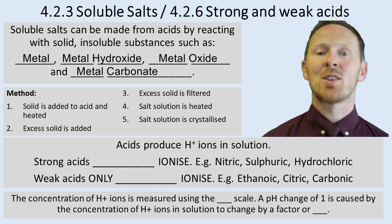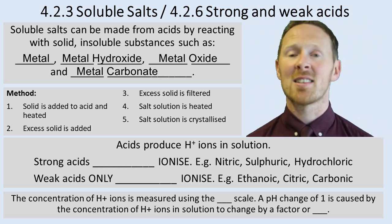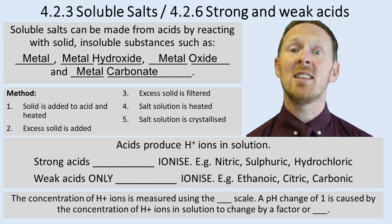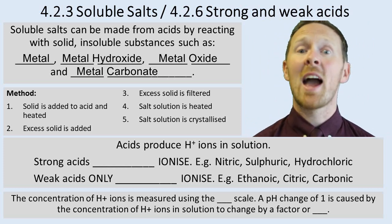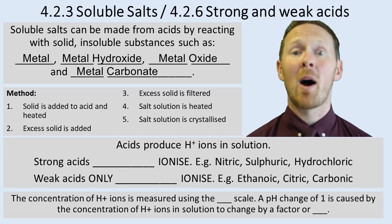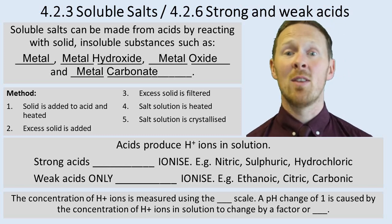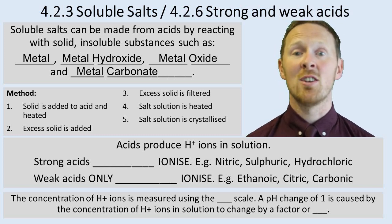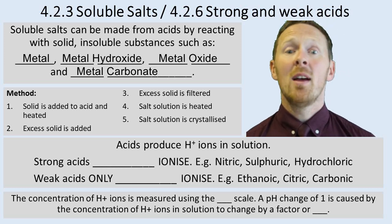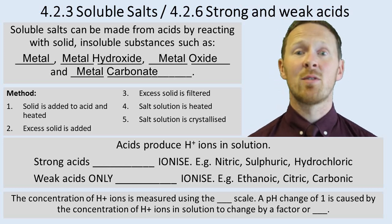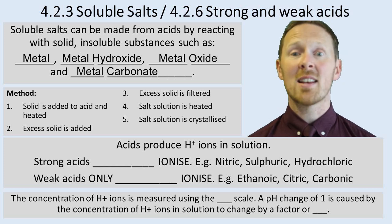First of all you would add the solid to the acid and you'd heat it up. This uses knowledge about rate of reaction because you're heating it up, which means more particles are going to react because you're giving them more than the activation energy. Then you would add excess of the solid so that you know that all of the acid has been used up.